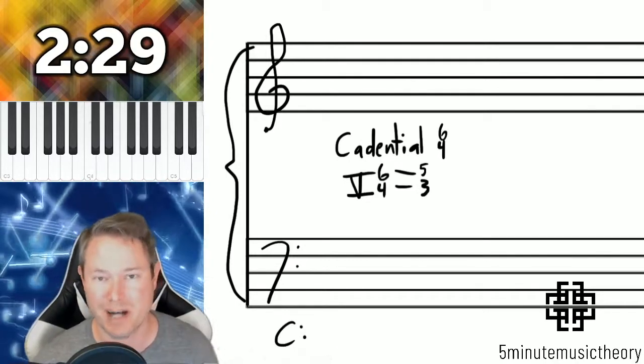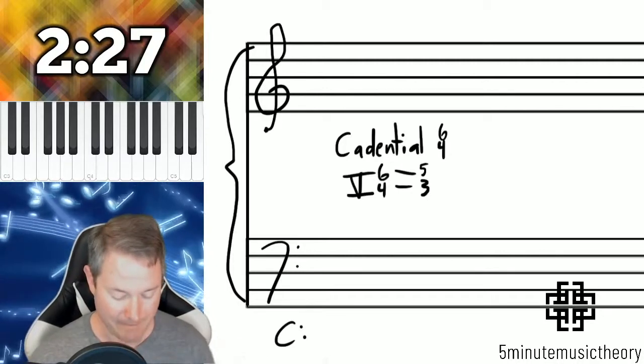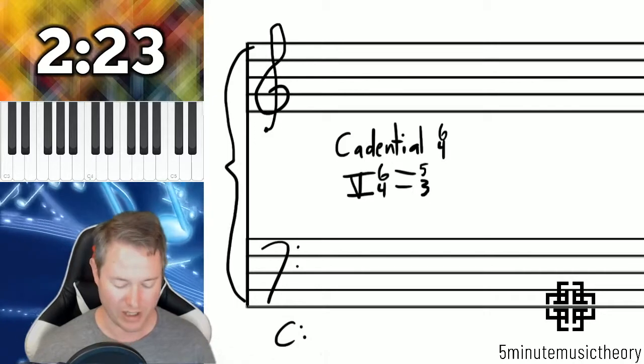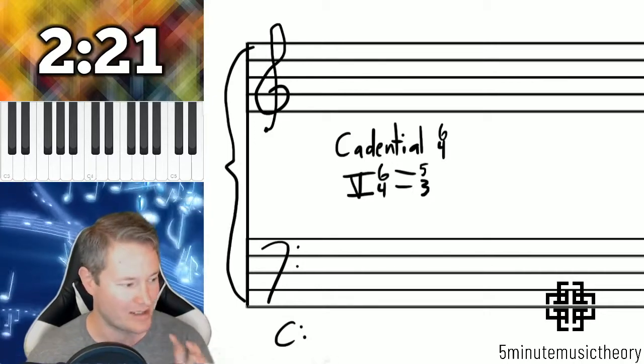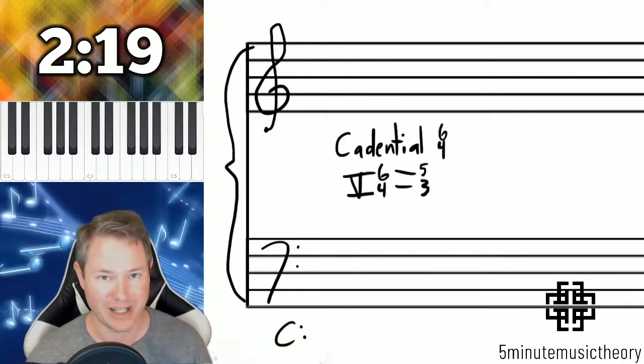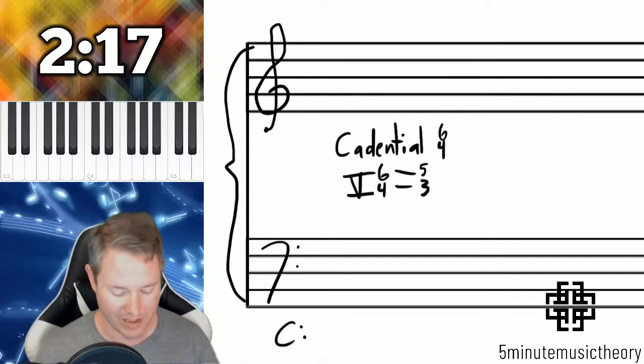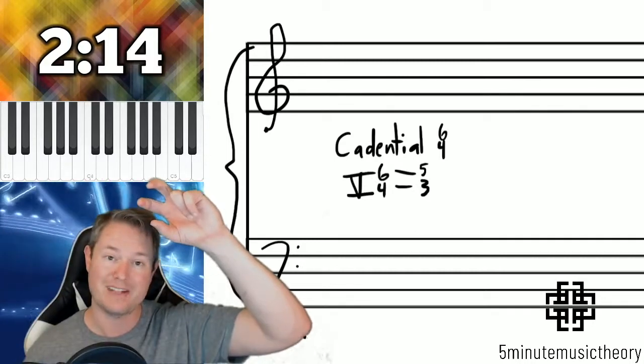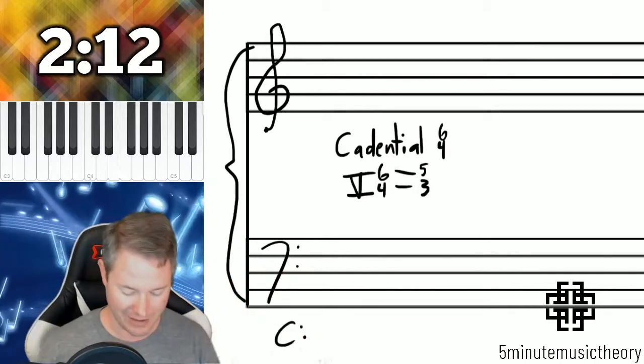So here's the labeling that I prefer for cadential 6-4s. It's a dominant 6-4 to a 5-3. Now what's kind of weird about that is that that first chord is not actually spelled like a dominant chord it's just performing a dominant function. What's happening is that there's a 6 and a 4 above the bass that then move down to a 5 and a 3.